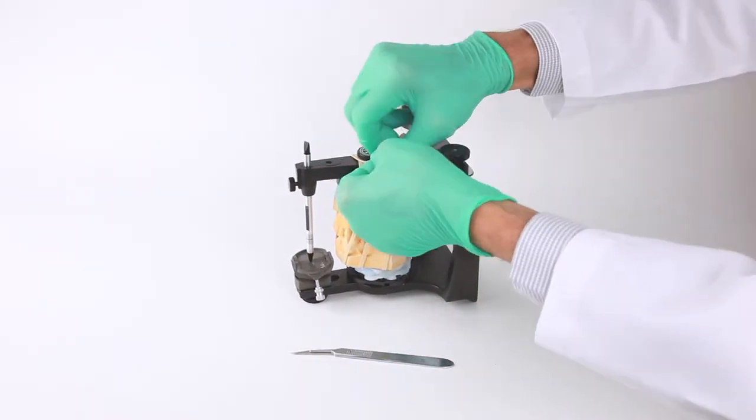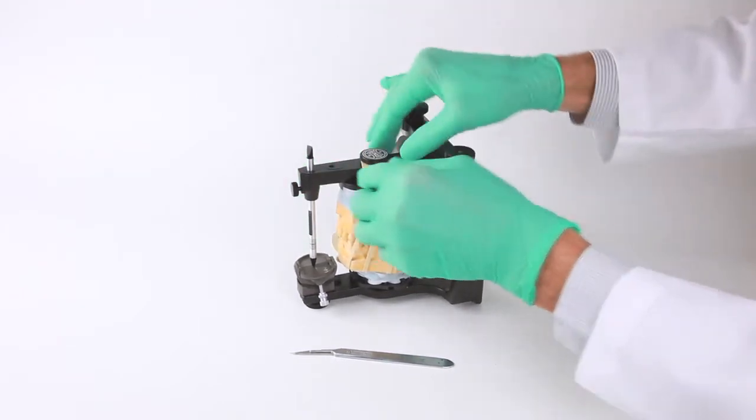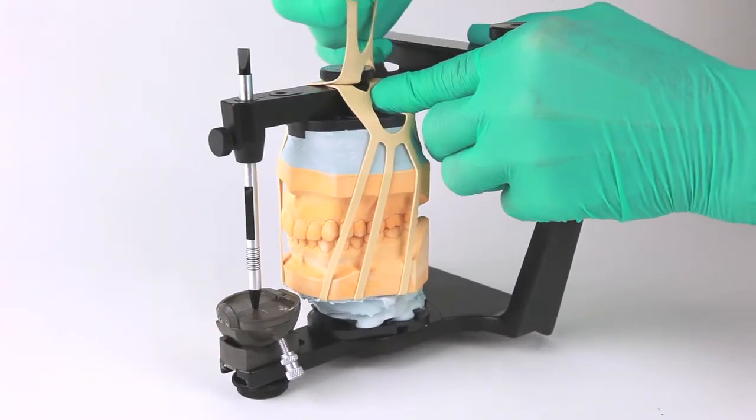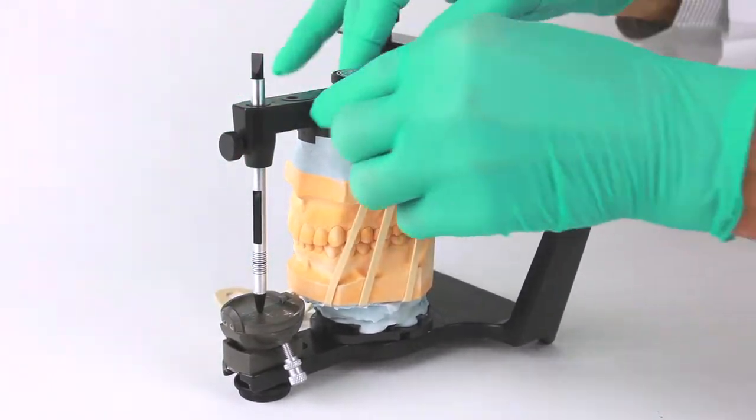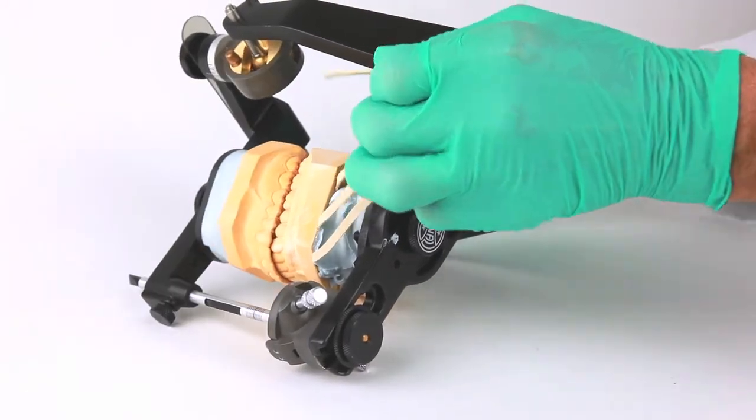After the stone has adequately set, the flexi-mount can be removed from the mounting thumbscrew on the articulator arm. Caution should be used not to put excessive force on the cast at this point. A second layer of stone should be added to give adequate strength to the cast mounting.